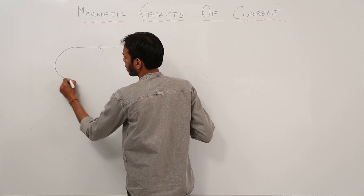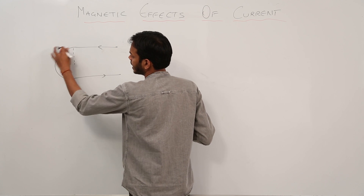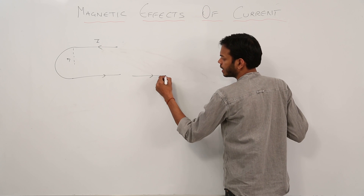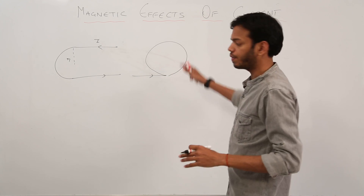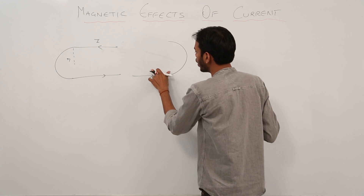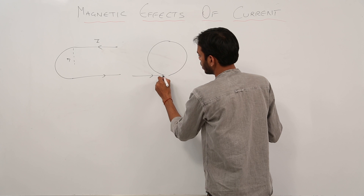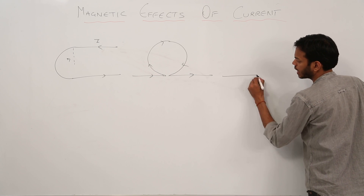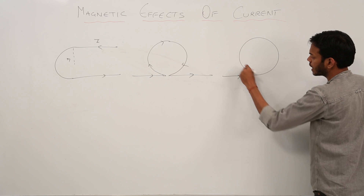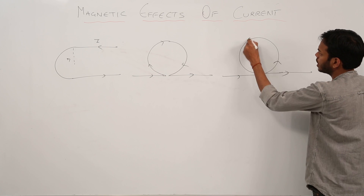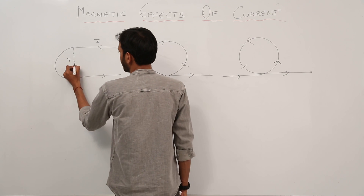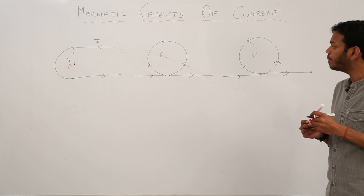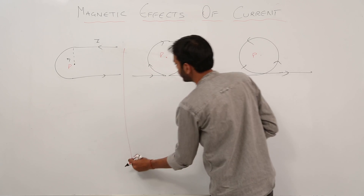I'm giving you three examples. Number one: current is flowing, there is a radius r and a semicircular part with current I — this is the first diagram. The second diagram: current is coming in this conductor and undergoes a circular path — I'll redraw it to make it more like a circle. In the third case, current is coming in, the circle is completed, and this is how the current is flowing. Find the magnetic field at point P in all three cases.